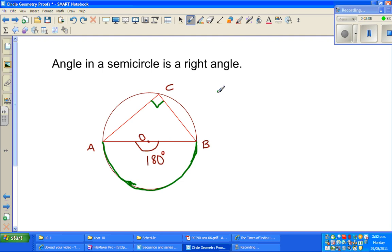Based on the last theorem, I can say angle ACB is half of angle AOB. We know AOB is a straight angle, or 180 degrees, or a half turn.